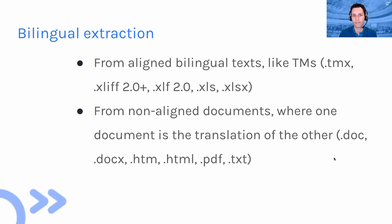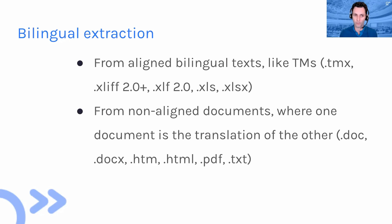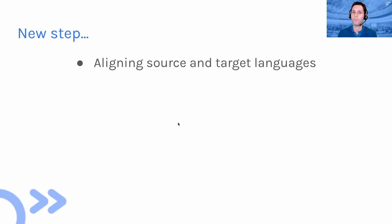Bilingual extraction with SketchEngine's one-click terms works two different ways. It can either work with texts that are already aligned, like a translation memory — you can see the various formats — or it can work with non-aligned documents when one of them is a translation of the other. There's just one new step that goes on behind the scenes, which is aligning the two documents.